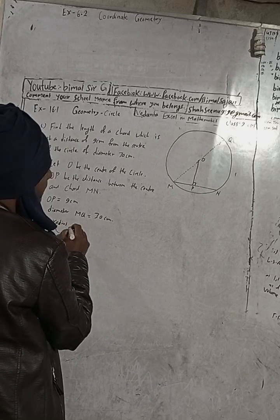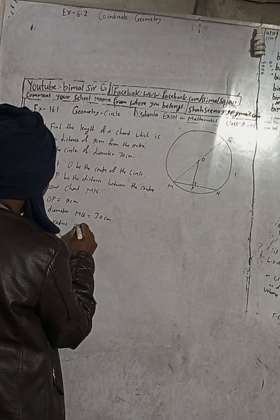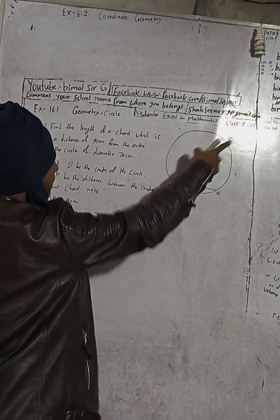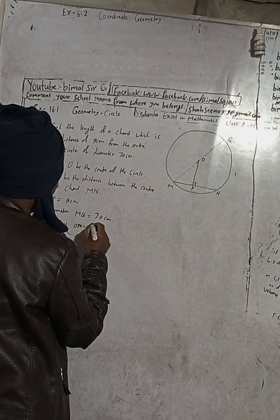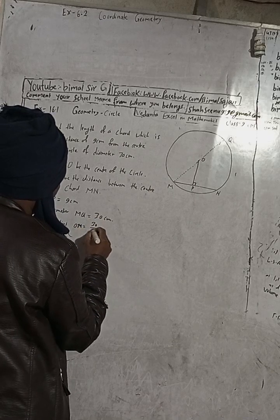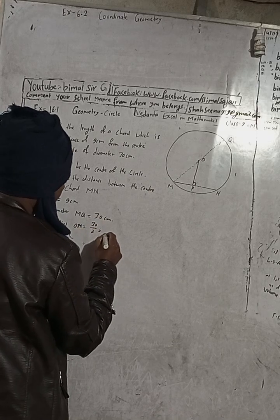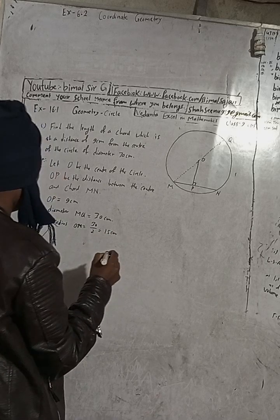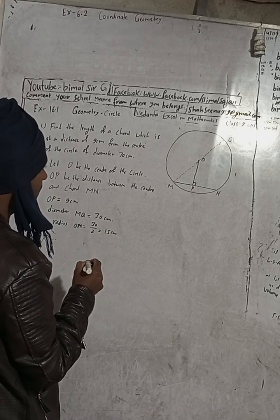If the diameter is 30 cm, then our radius OM is equal to half of the diameter — that means 30 divided by 2, which equals 15 cm.